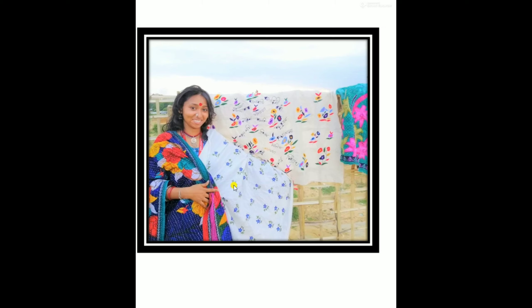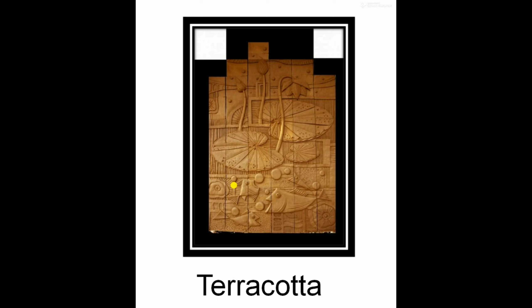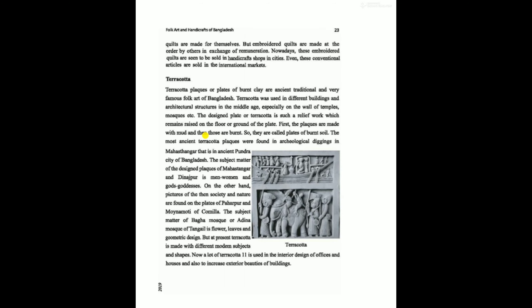Our next topic is terracotta. In this section, we will learn the oldest story of terracotta. Terracotta art is the nearest form of plastic art in which the Bengal artists excelled. The art products in terracotta or burned clay satisfied the creative impulse of the artist and also met the domestic and ritual needs of ordinary people. Clay objects were either baked in the sun or burned into terracotta for hardening and durability.